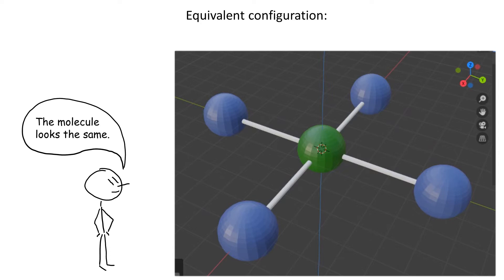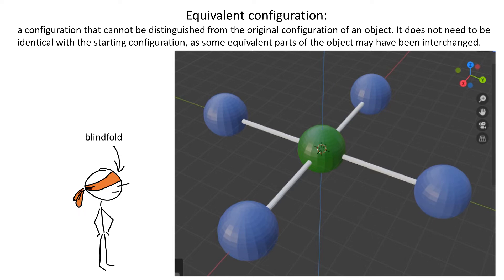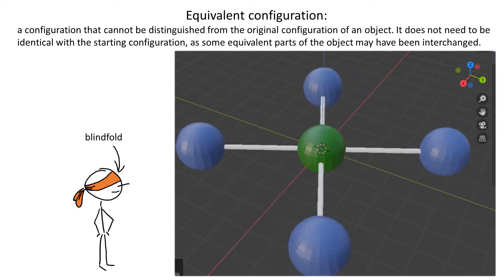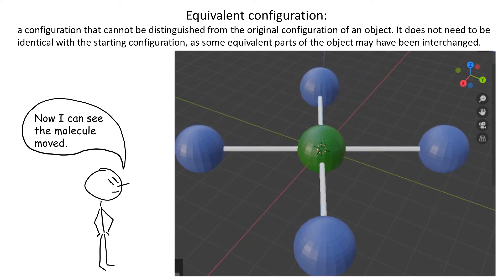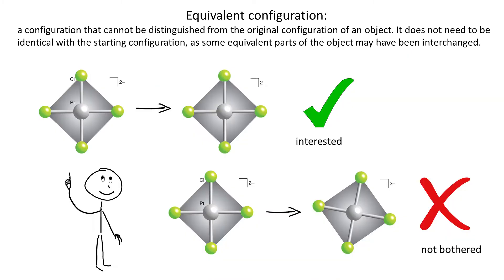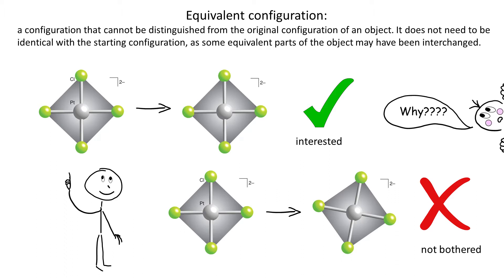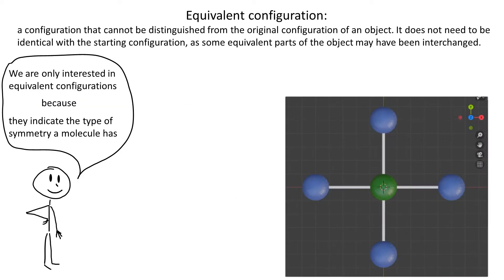because the model of our molecule has returned to a so-called equivalent configuration. When we rotate by say 30 degrees, our stickman will notice that the molecule has moved — so that is not an equivalent configuration. From now on we will only be interested in the cases when molecules return to an equivalent configuration, because it allows us to classify the symmetry of a molecule.